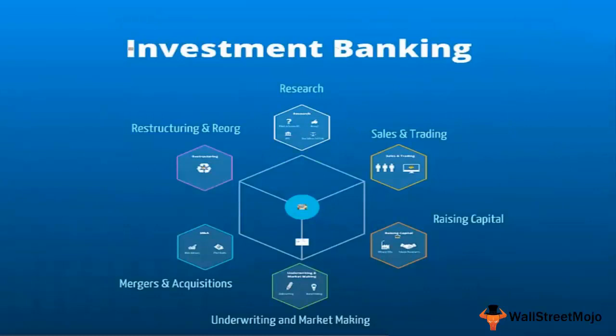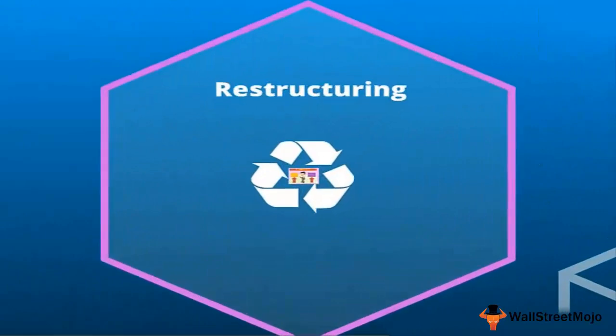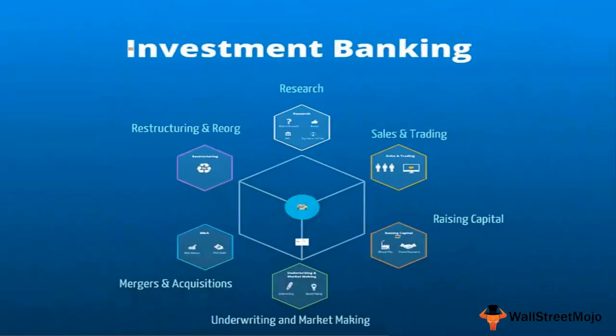Lastly, we saw that restructuring is another key area, covering companies that are at difficult stages of their business — facing cash crunches or other challenges. Investment banks help in two ways: reorganizing structure and strategy, including changing CEOs, and restructuring the debt side or selling assets to reduce debt. All these activities are addressed under restructuring and reorganization.